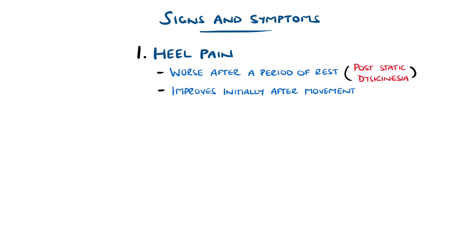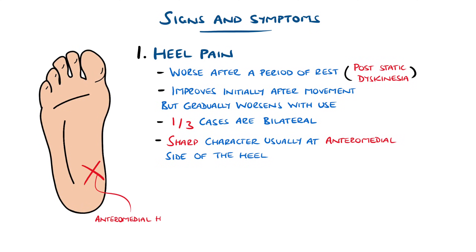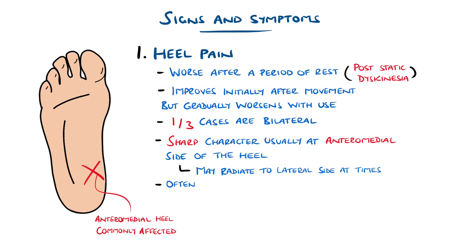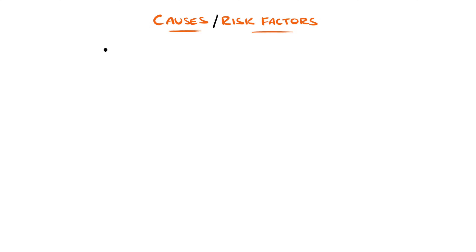It tends to worsen gradually throughout the day with use and generally then improves with rest. It is usually in one heel but can be in both in around one in three patients, and is most commonly a sharp pain on the anteromedial side of the heel. At times, this may also radiate to the outer, lateral side of the heel. Commonly, the pain is worse when walking barefoot or on hard flooring, and the history is usually of a gradual onset rather than suddenly after trauma. It is most common between the ages of 40 and 60 years, with roughly equal effect on males and females.